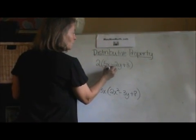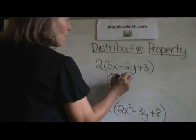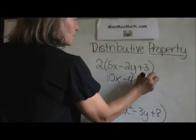2 times 5x minus 2y plus 3. That's 10x minus 4y plus 6.